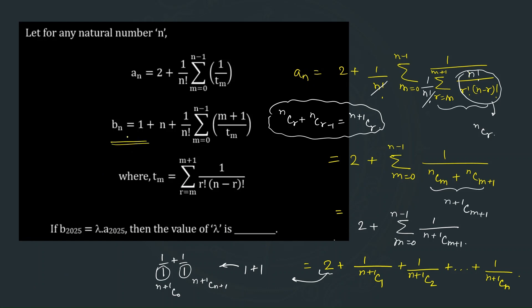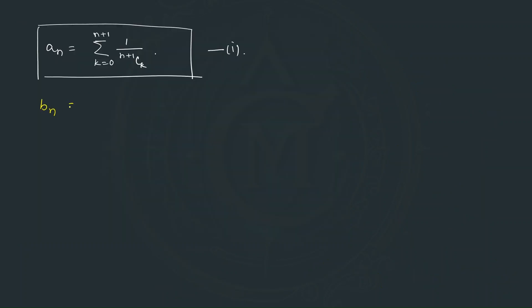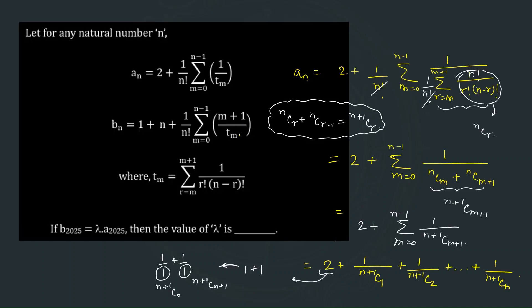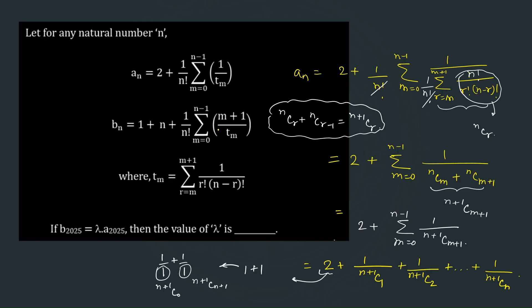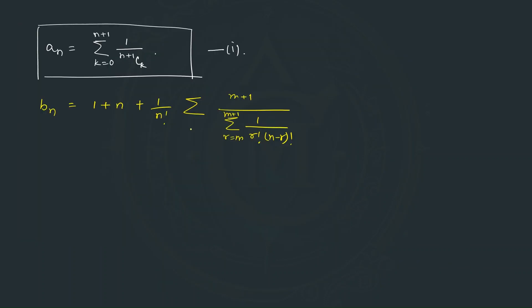Now let us decode the series bₙ. Copying to the next page: bₙ equals 1 plus n plus 1 over n factorial, summation of (m+1) divided by tₘ, where tₘ is the same as before. So (m+1) divided by summation r equal to m to m+1 of 1 over r factorial (n−r) factorial, running from m equal to 0 to n−1.